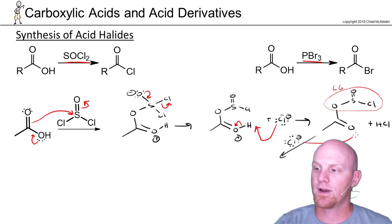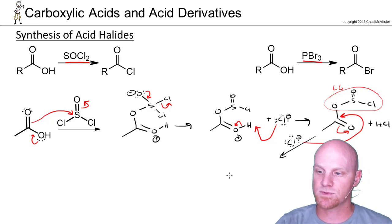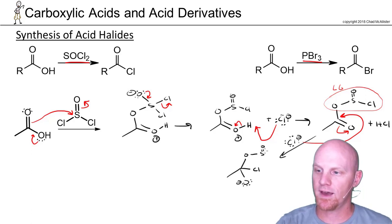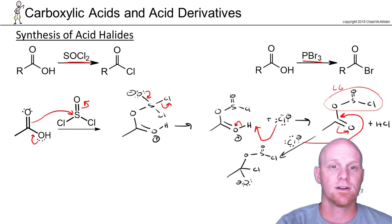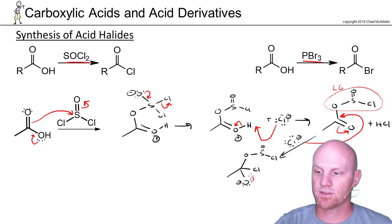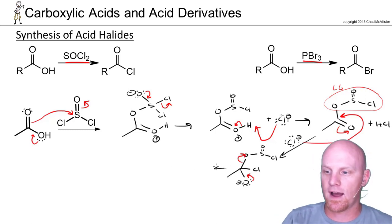The chloride comes around, does nucleophilic attack, kicks the electrons out to the oxygen — similar to the mechanisms we've seen. Because our nucleophile was an anion, it's the easy mechanism: the electrons come right back down, kick this off as a leaving group, and we now have our acid chloride.